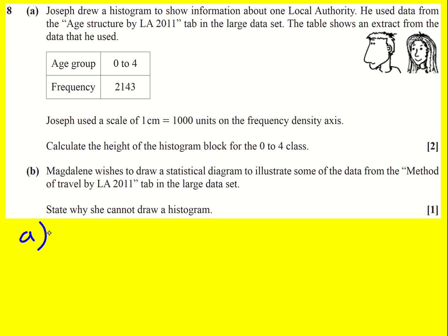That means we're going to need to work out the frequency density, which is the frequency divided by the class width. Once we've got that in some sorts of units, we need to convert it into centimeters, which will just involve dividing it by a thousand. So the question is how we're going to work out the frequency and how we're going to work out the class width.